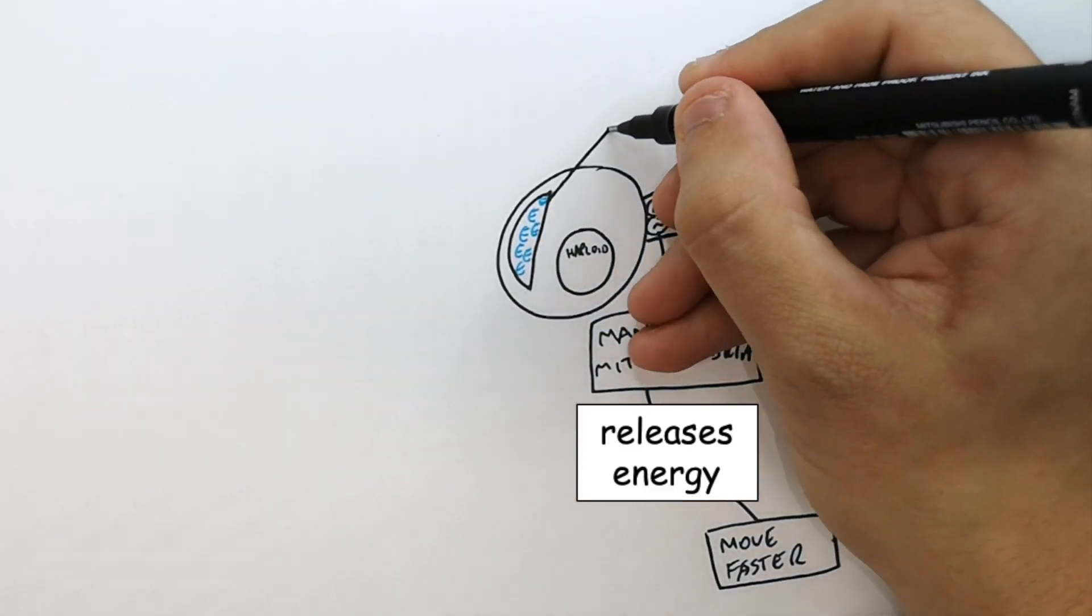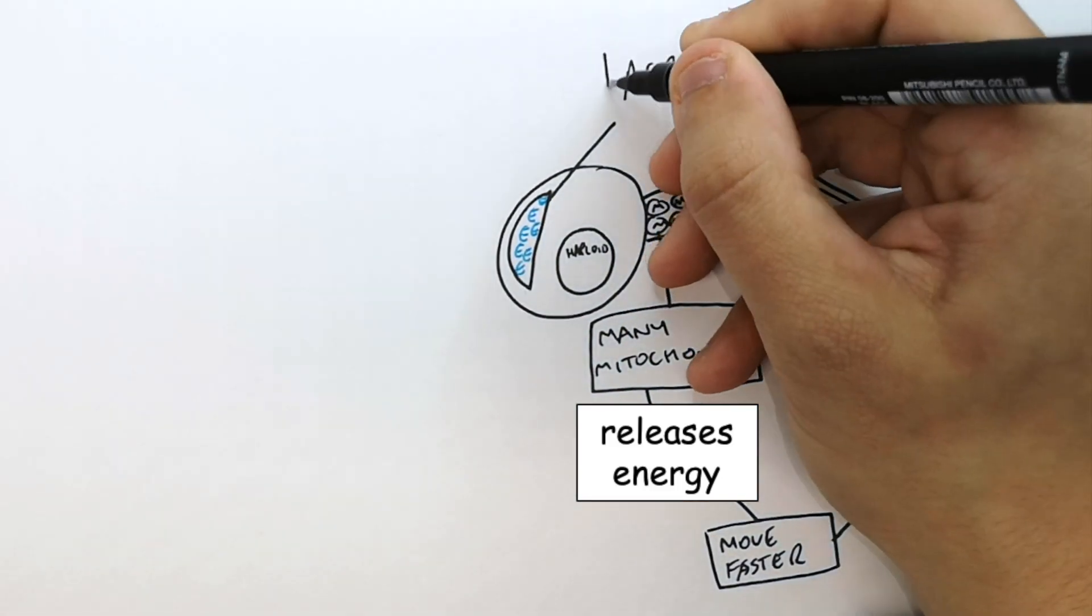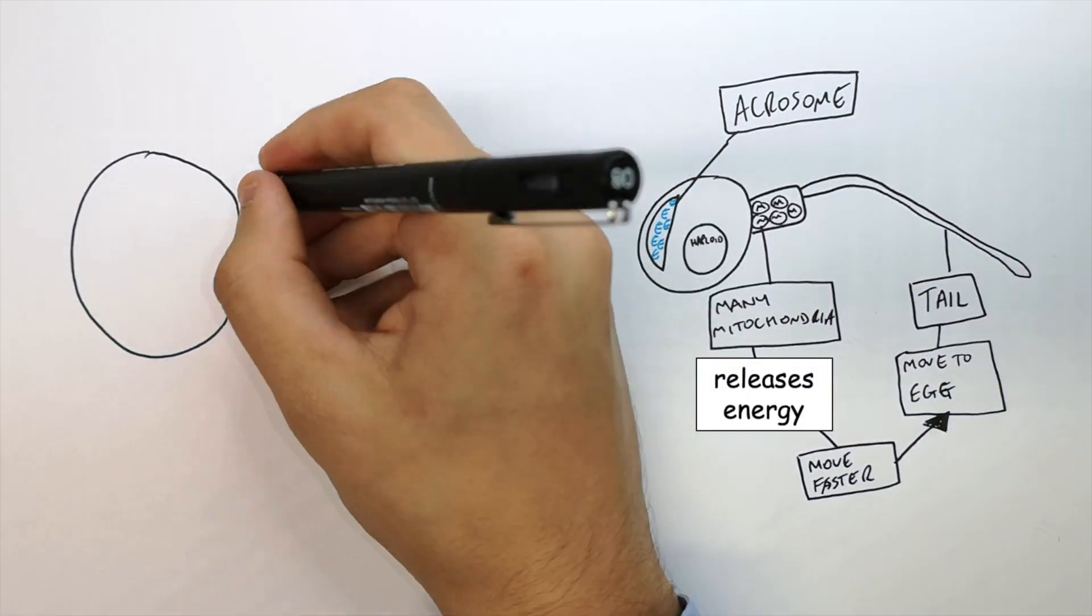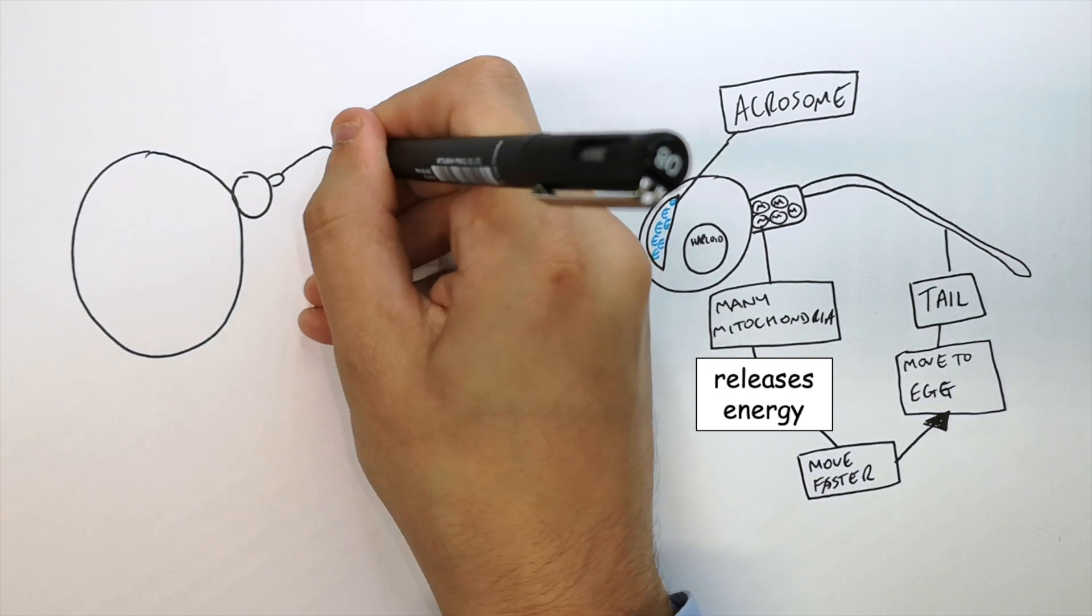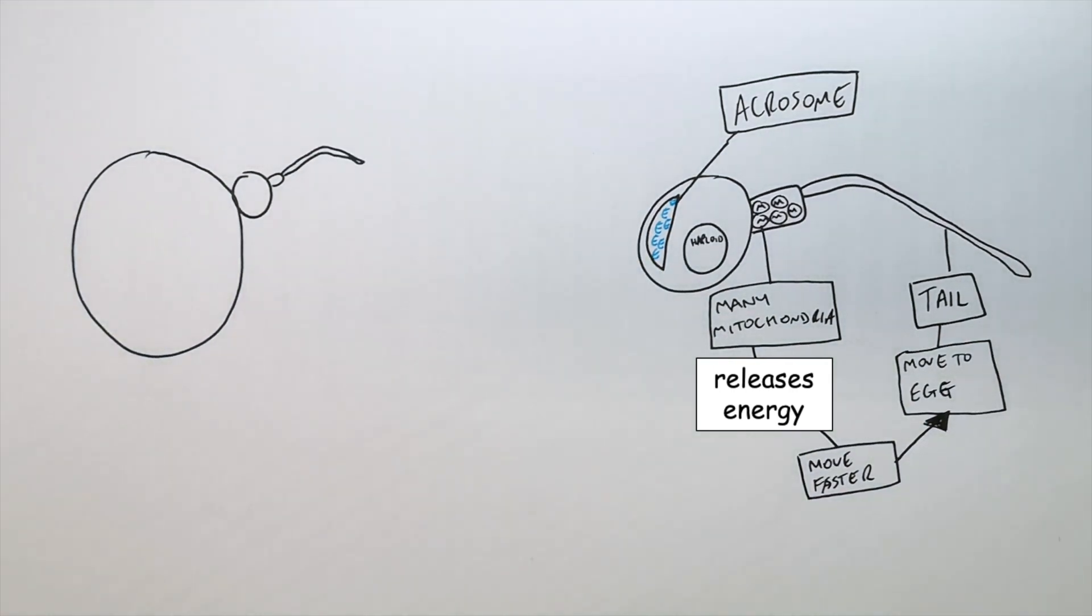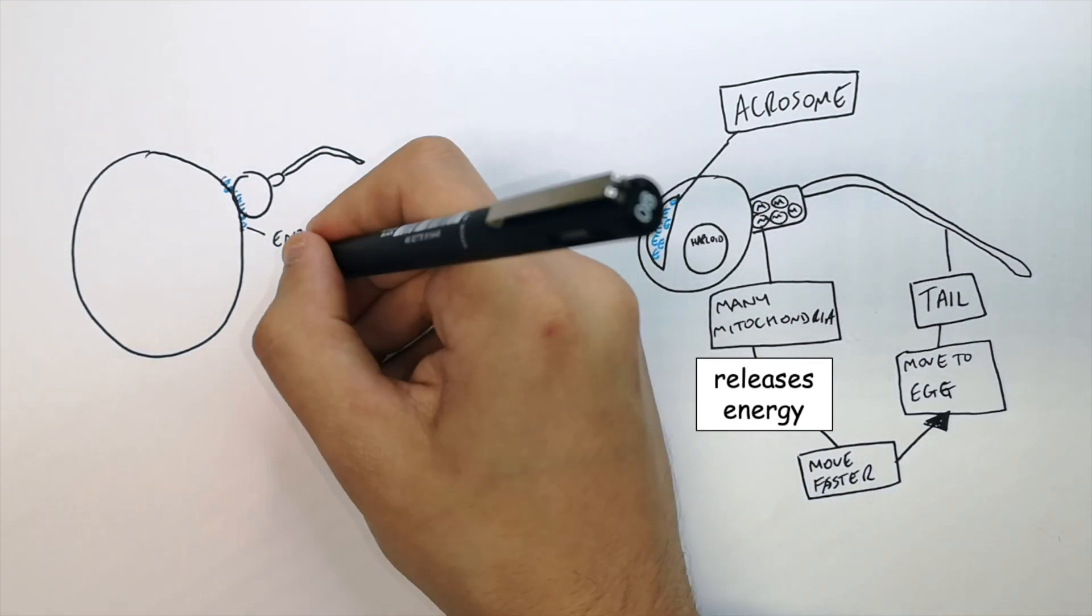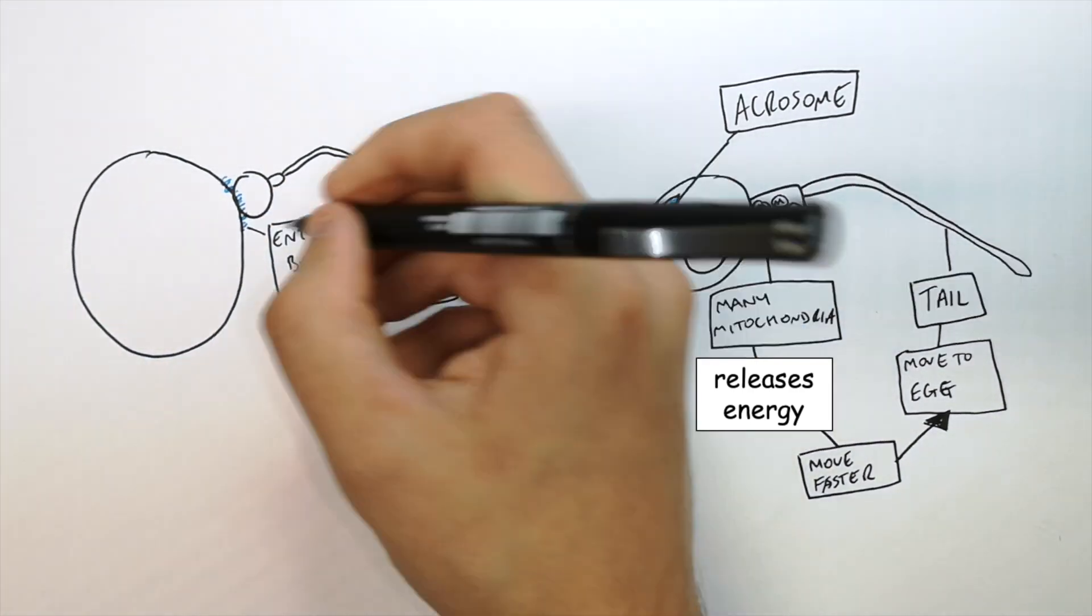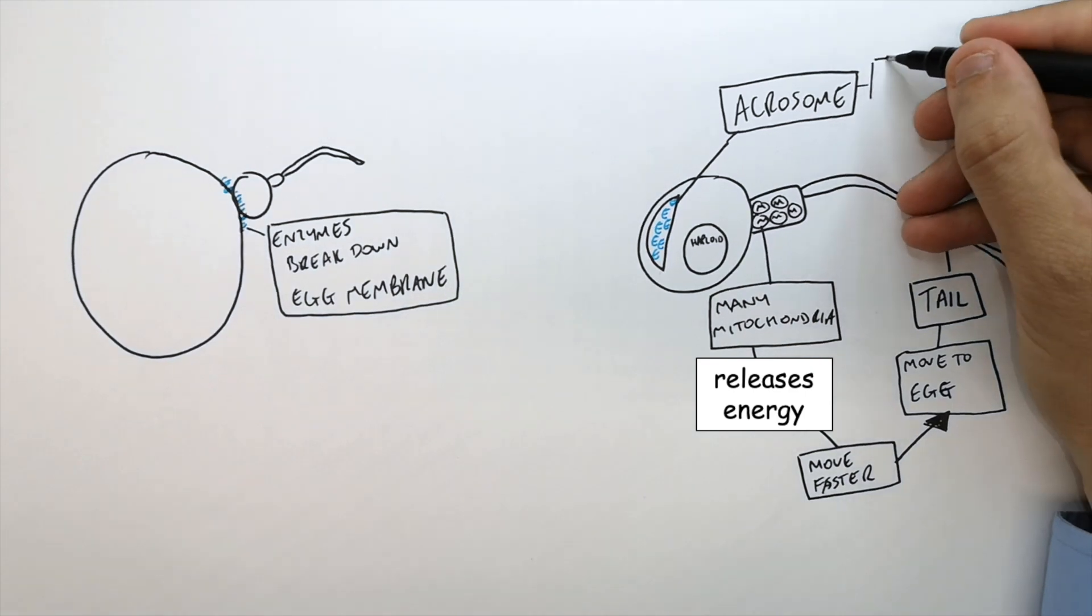I'm now going to explain the function of the acrosome in the head of the sperm. I'm drawing the egg, and the sperm has now reached the egg to fertilize it. The sperm releases digestive enzymes that will break down the cell membrane of the egg so it can enter, and this is possible because the acrosome contains the enzymes.